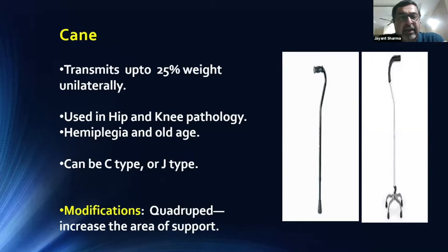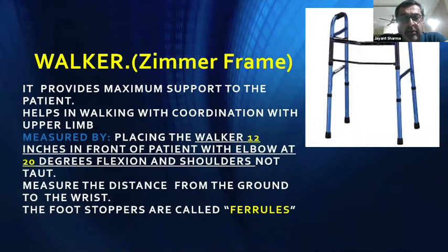A cane or walking stick transmits up to 25% of body weight unilaterally. It is used in hip and knee pathology, mainly in hemiplegia and old age. It can be a C or J type cane. A modification is the quadruped cane, which increases the surface area of support.